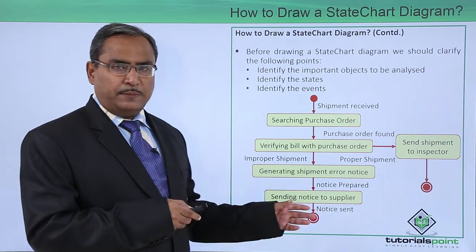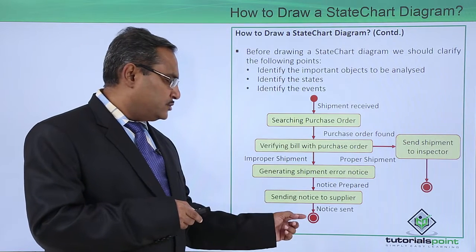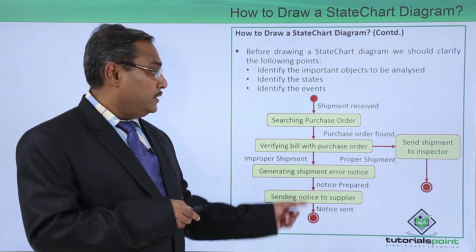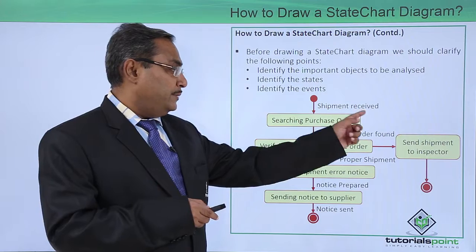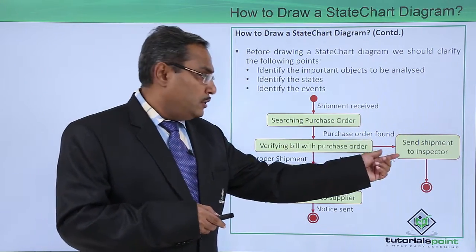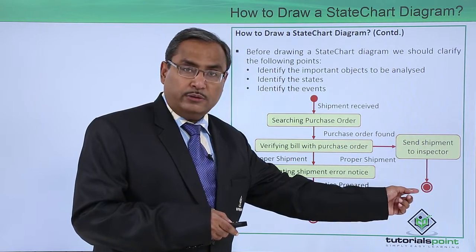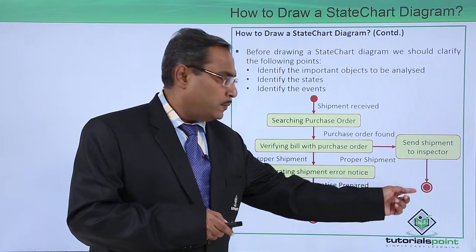Consider this respective example. This is the starting state and this is the stop state or the finishing state. So shipment received, searching purchase order. If the purchase order has been found, then send shipment to inspector and it will be going to the finishing state or stop state.